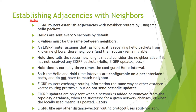The neighbor hold time value must be the same. If a neighbor goes down and their route remains unavailable, the router considers how long it should hold the neighbor alive if it has not received any EIGRP hello or update. Hold time is normally 3 times the hello interval. Both the hello and hold time are configurable on a per-interface basis and do not have to match the neighbor.